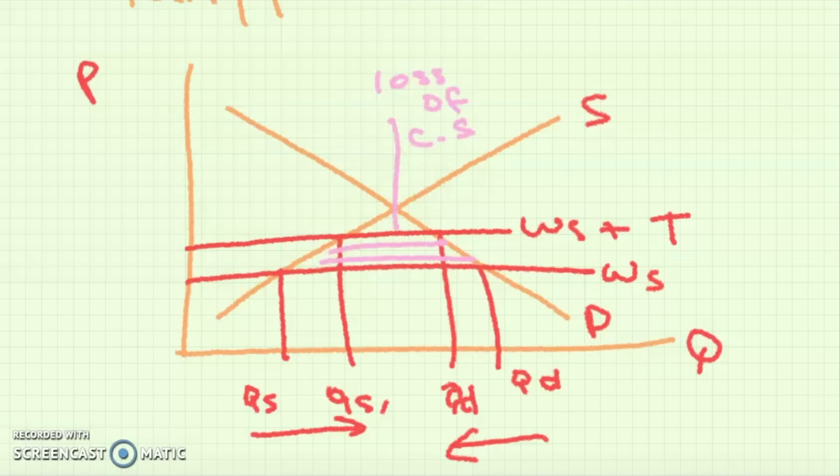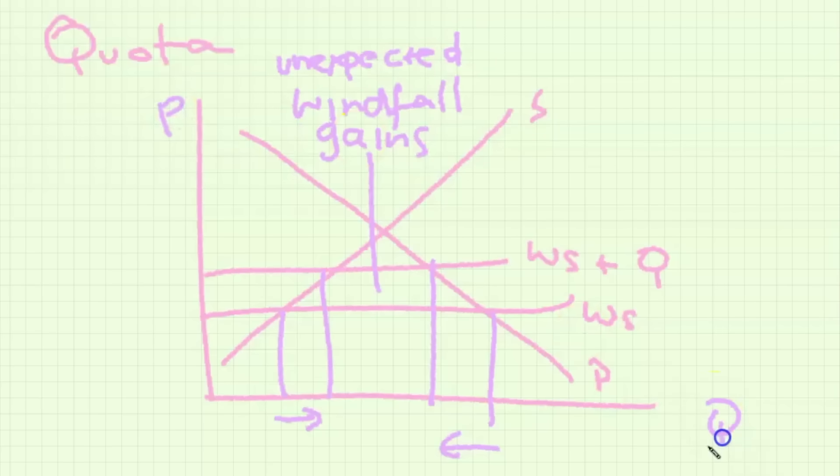If I wanted to draw a quota it would be the exact same diagram. The only difference is that the area of tax revenue for a quota is not gained because it is not a tax. Instead it is unexpected windfall gains which is basically an increase in the revenue of foreign producers if price goes up more than quantity decreases.